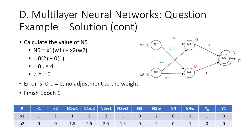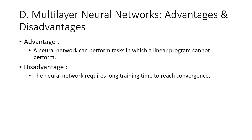For neuron five, there are two arrows coming in. Arrow one has input zero and weight two. Arrow two has input zero and weight one. Summing gives zero, which is less than four, therefore y is zero. Since the desired output is also zero, zero minus zero means there will be no adjustment to the weights. Since the training data has only two rows, we have finished epoch one.